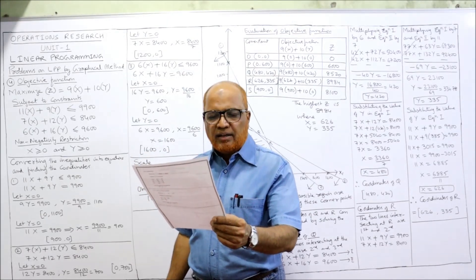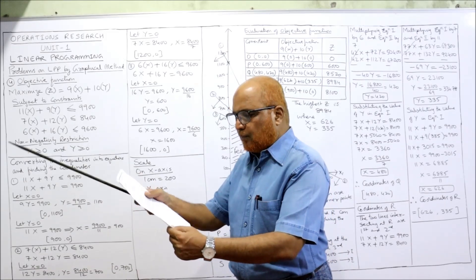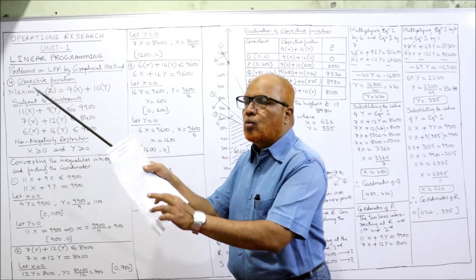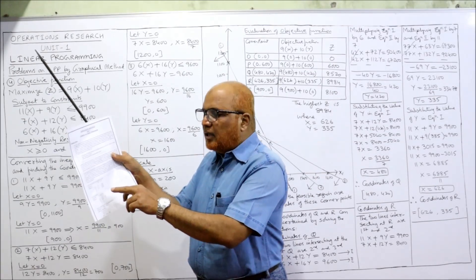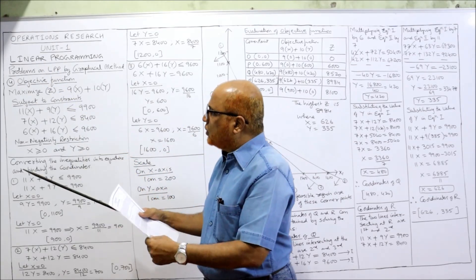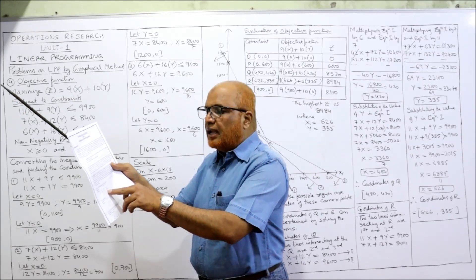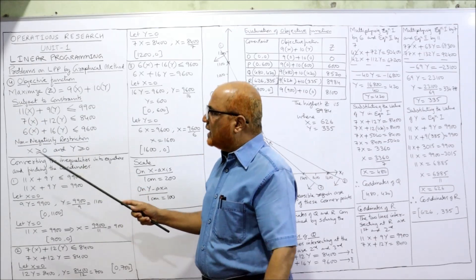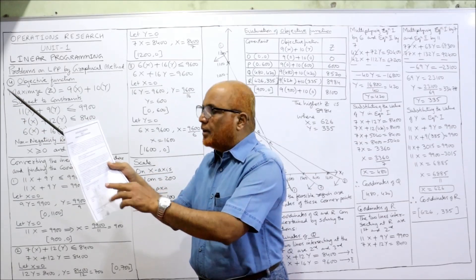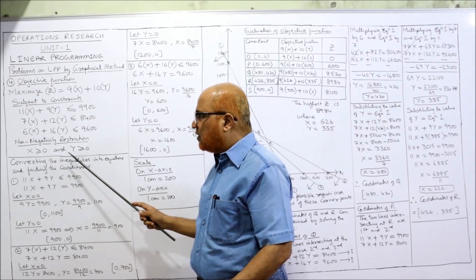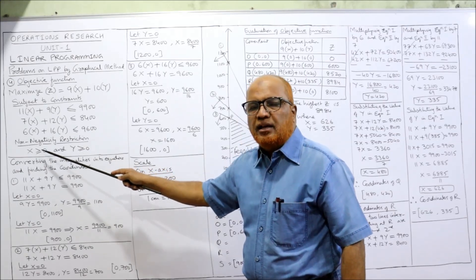Subject to the constraints: first, 11x plus 9y less than or equal to 9900; second constraint, 7x plus 12y less than or equal to 8400; third constraint, 6x plus 16y less than or equal to 9600; and the non-negativity restrictions x greater than or equal to 0 and y greater than or equal to 0. This is the complete problem given in the question.